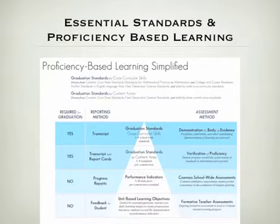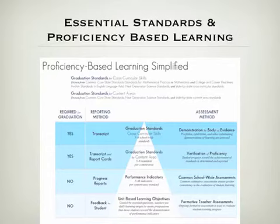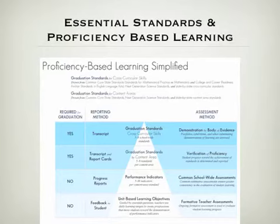Looking at this graphic from the League of Innovative Schools website, you can see how the standards are broken down — I'll refer to them as essential standards. At the top are graduation standards, which are cross-curricular skills talked about in every content area — big lofty ideas such as creative problem solving and communication. Directly underneath that are what I'll be referring to as essential standards, and below that are performance indicators.